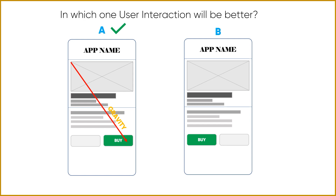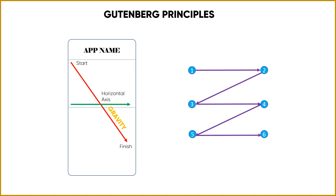The Gutenberg principle describes how gravity flows diagonally from top-left to bottom-right, with a horizontal axis going left to right — forming a Z or zigzag pattern in how users consume content. Users can also consume content in an F pattern or X pattern. You can run a heat map test on your UX and UI to determine whether users follow an F, Z, or X pattern.